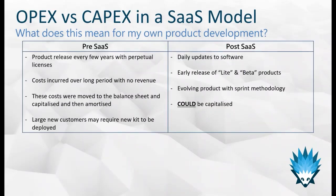In the pre-SaaS world, software was developed over long time periods, and these costs would then be released periodically. Businesses were incurring huge amounts of costs — developer costs, UX engineers, etc. — all working together to build up to the next iteration they wanted to release. By moving these costs up to the balance sheet and amortizing them over a long time period, you're spreading the cost to match the revenues that their work will be generating.